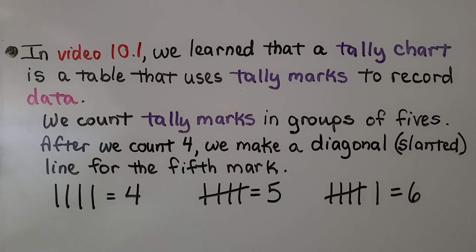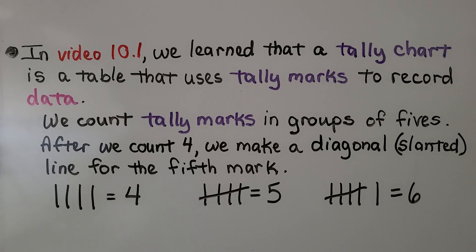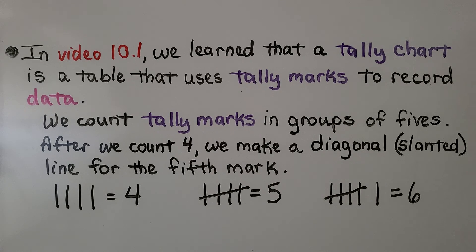In video 10.1, which is linked in the description, we learned that a tally chart is a table that uses tally marks to record data. We count tally marks in groups of fives. After we count four, we make a diagonal — that's a slanted line for a fifth mark.